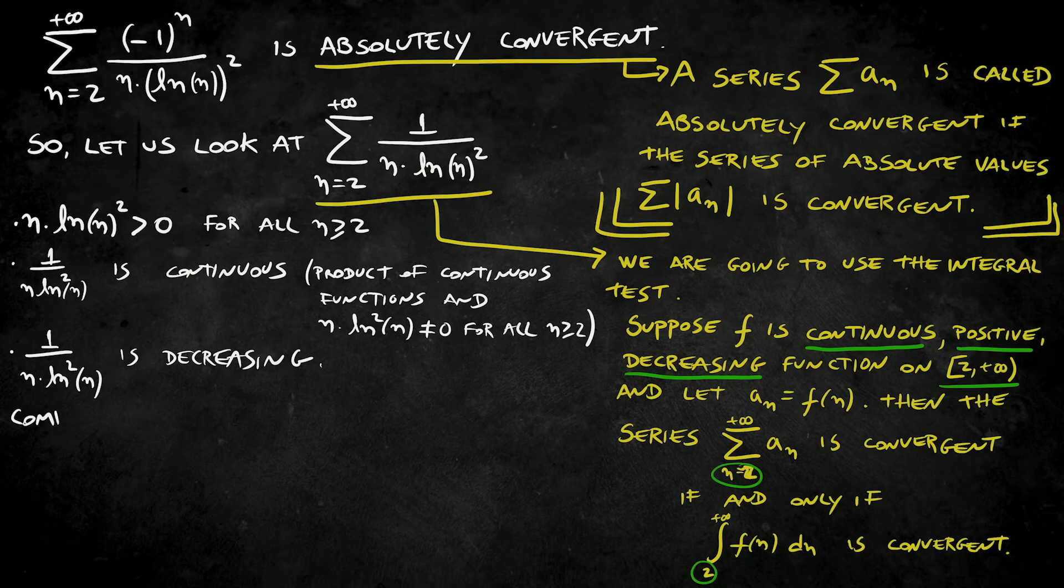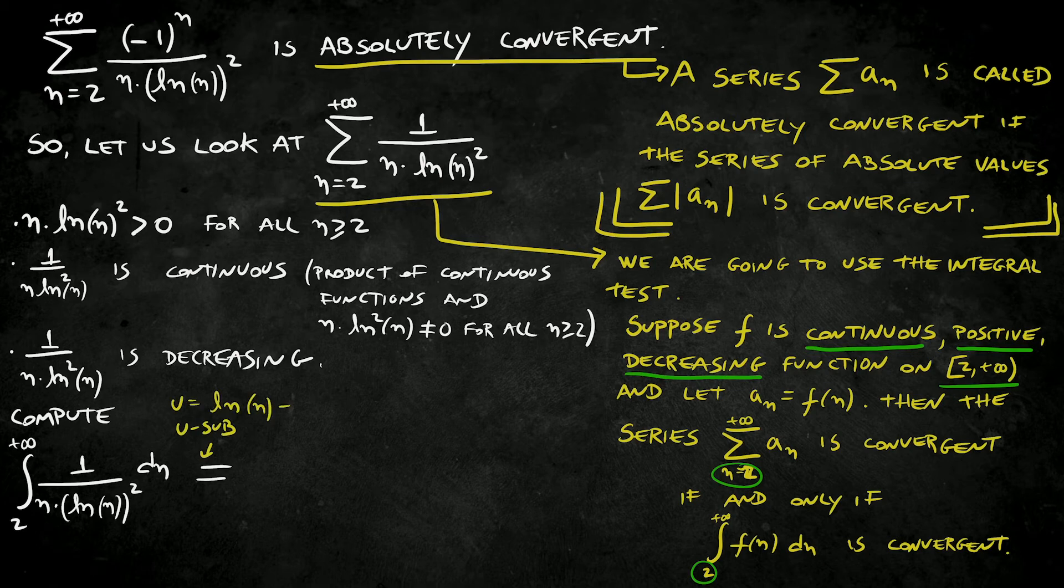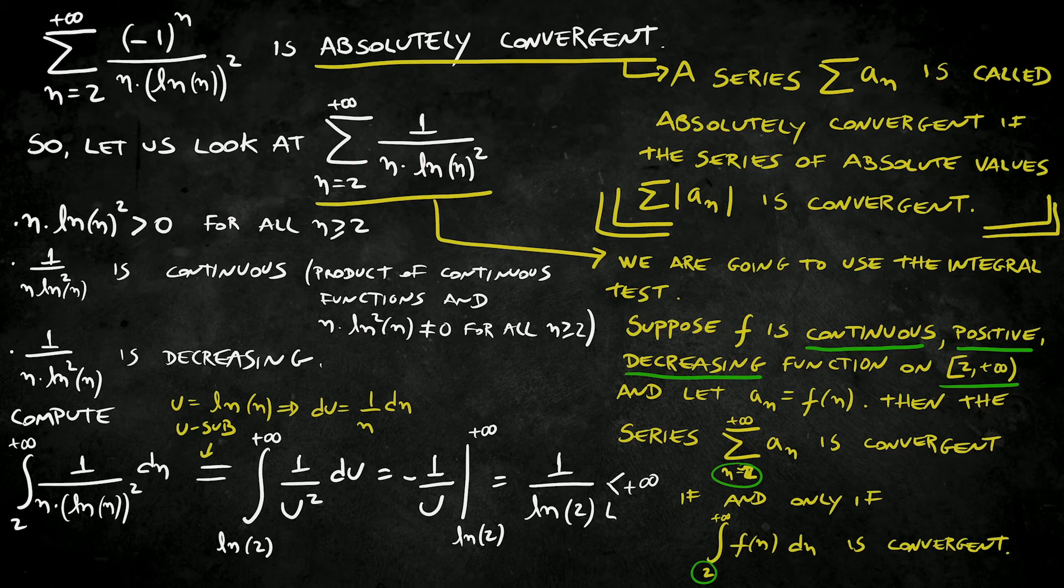Applying that, computing the integral from 2 to positive infinity of 1 over n times ln of n squared dn, using u substitution here, calling u equals ln of n, then we're going to have, after simplifying a little bit, the integral is equal to 1 over ln of 2. That's finite.